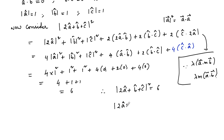So |2â + b̂ + ĉ| = √6. Therefore √6 is the answer.